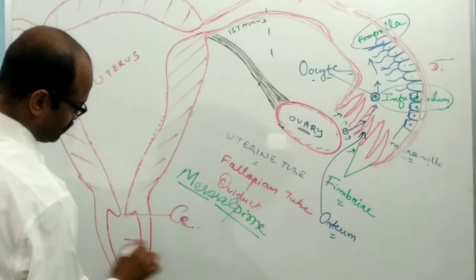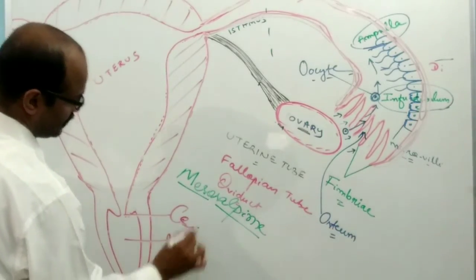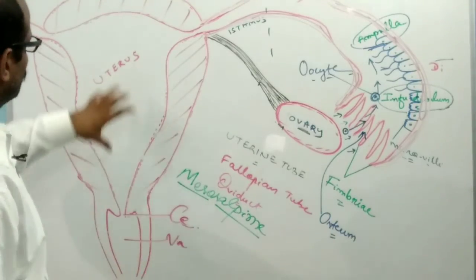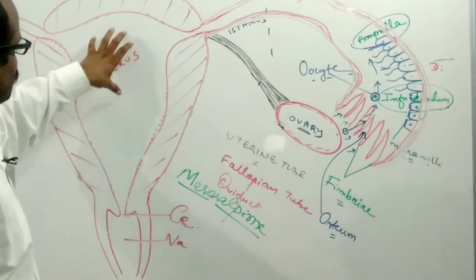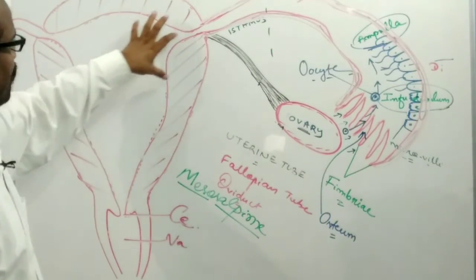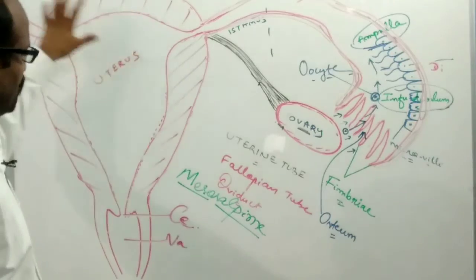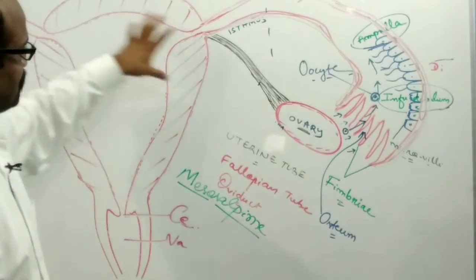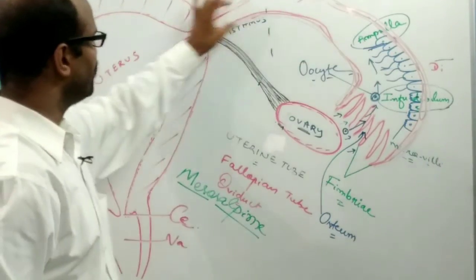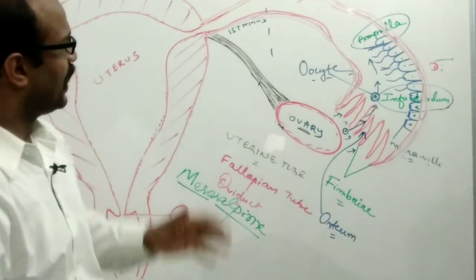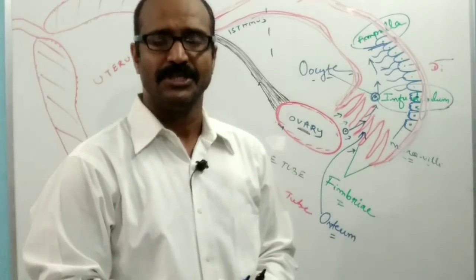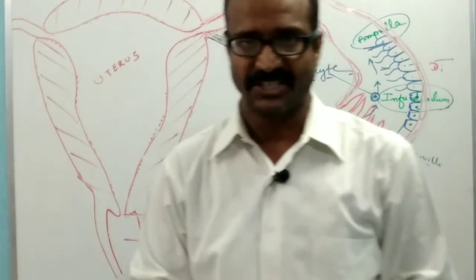This portion is the vagina. The suprolateral region of the uterus receives the opening of the fallopian tube. Thank you for watching.